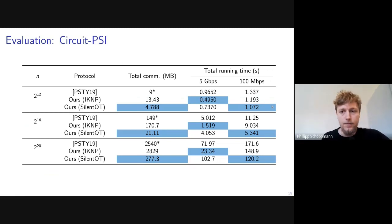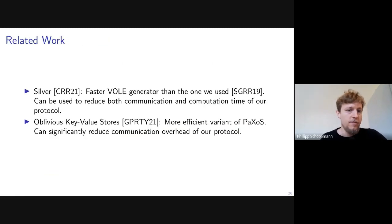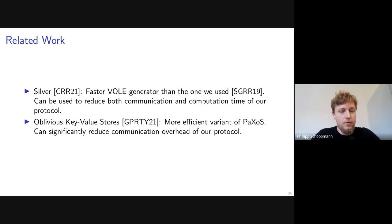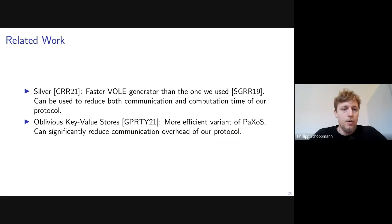That concludes the talk. Two related works presented at Crypto this year can also improve the protocols here. The first is Silver, a faster vector OLE generator — faster in both computation and communication than the one we use — which would strictly improve our PSI protocol. The second is a paper on oblivious key-value stores, which are more efficient variants of Paxos and can be used in both our PSI and circuit PSI constructions to significantly reduce communication overhead. Thank you for your attention, and I'm happy to take questions.